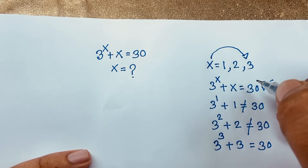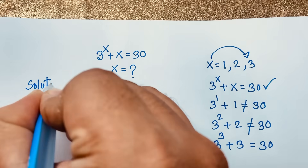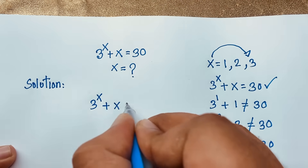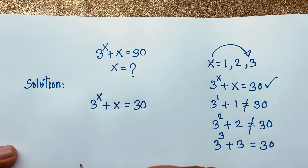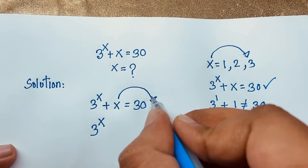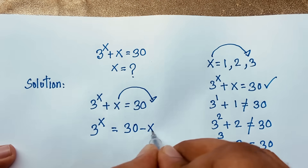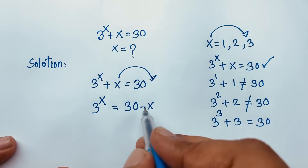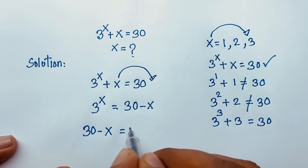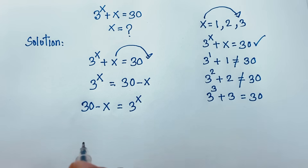Now let's start the formal solution step by step. Our equation is 3 to the power x plus x equals 30. I move the positive x to the other side, making it negative: 3 to the power x equals 30 minus x. Then I divide both sides by 3 to the power x.